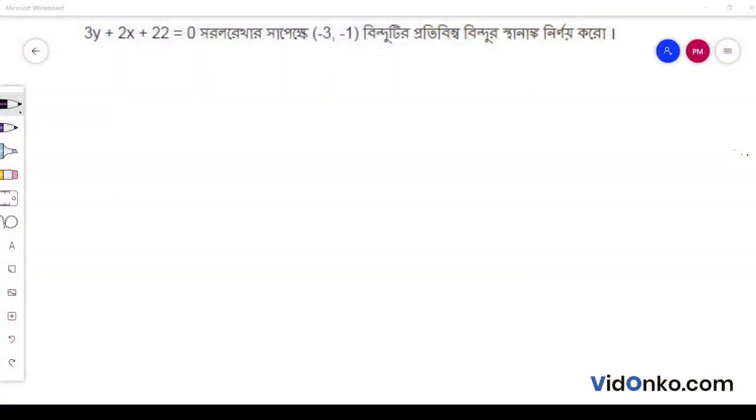Let's see. The problem is 3y plus 2x plus 22 is equal to 0. The first thing we have to do is write 3y plus 2x plus 22 is equal to 0. This function is through point 1, minus 3, minus 1.